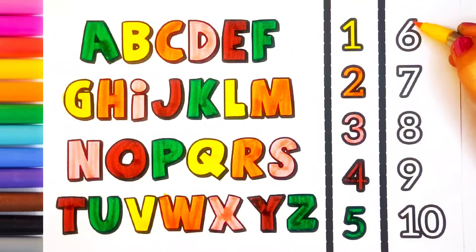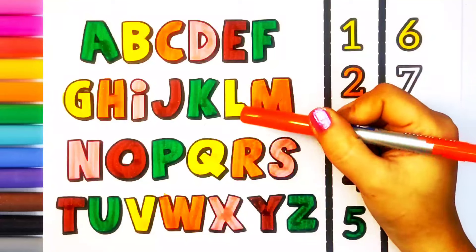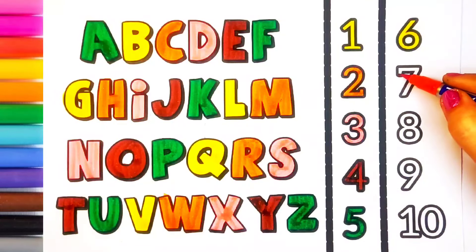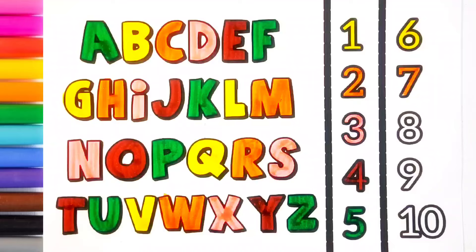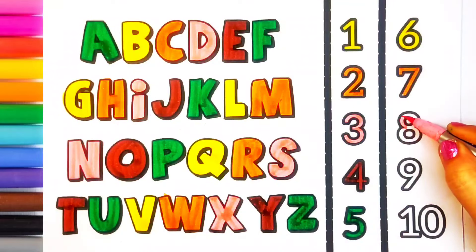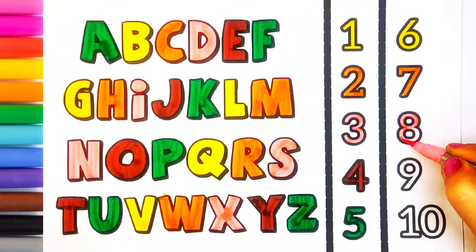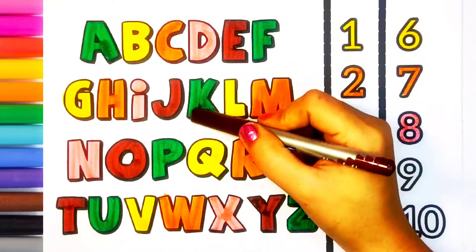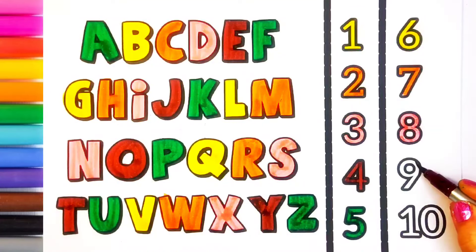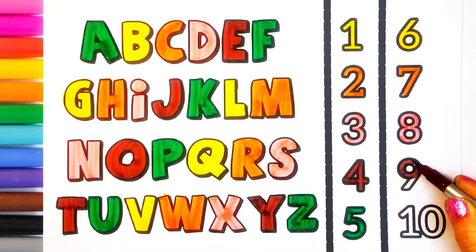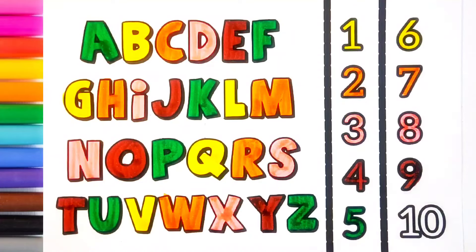Yellow color, six. Orange color, seven. Pink color, eight. Brown color, nine. Dark green color, ten.